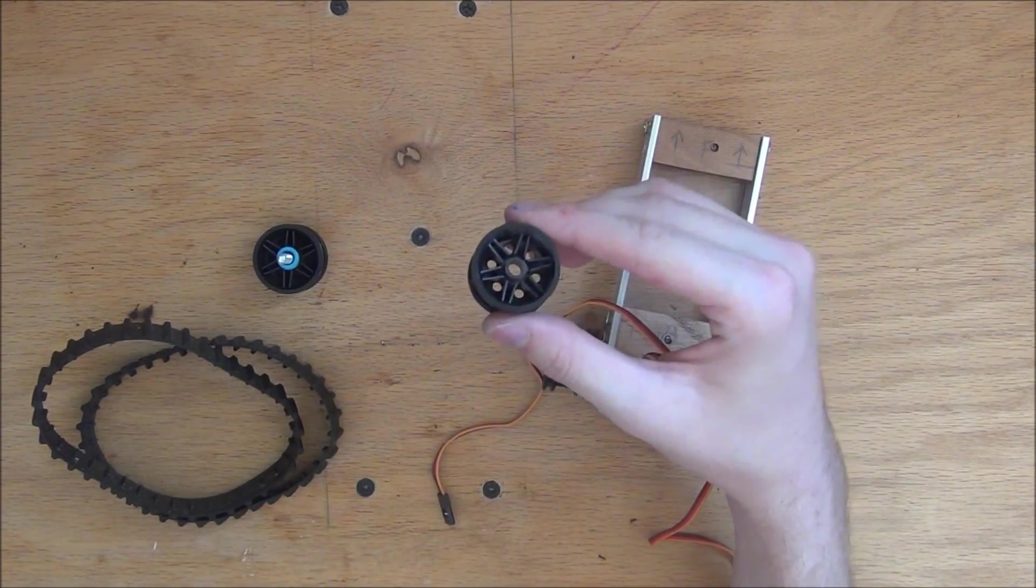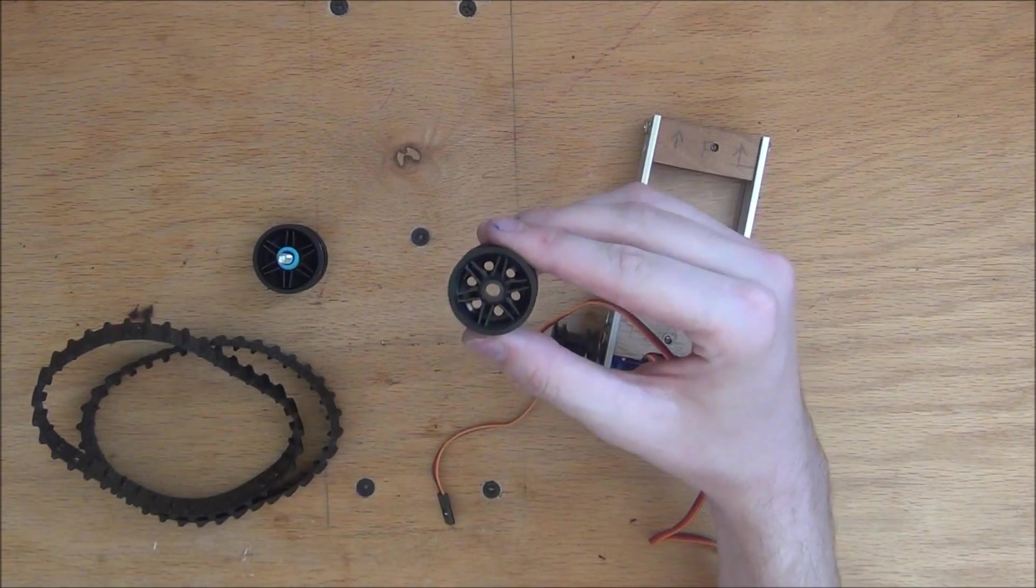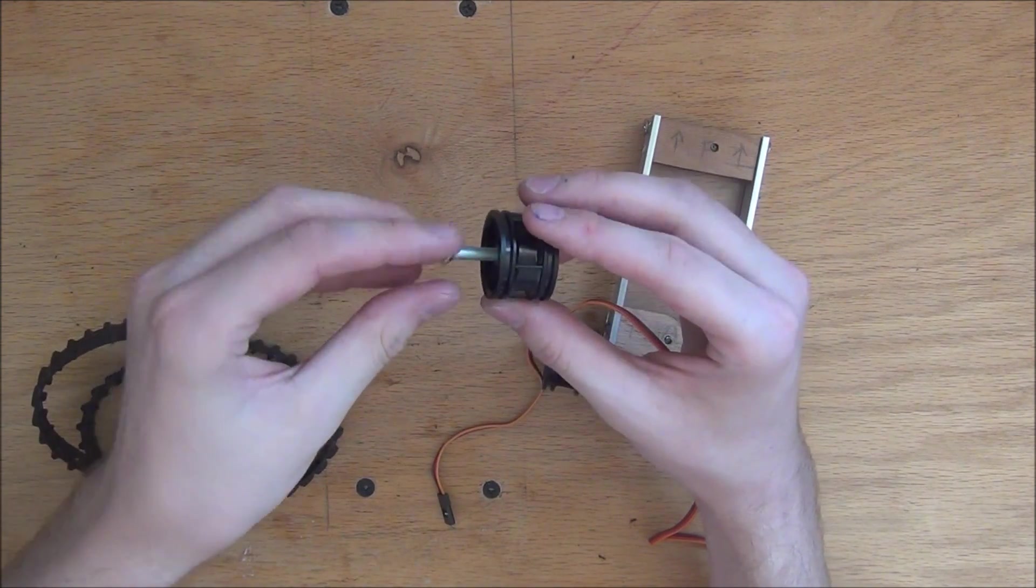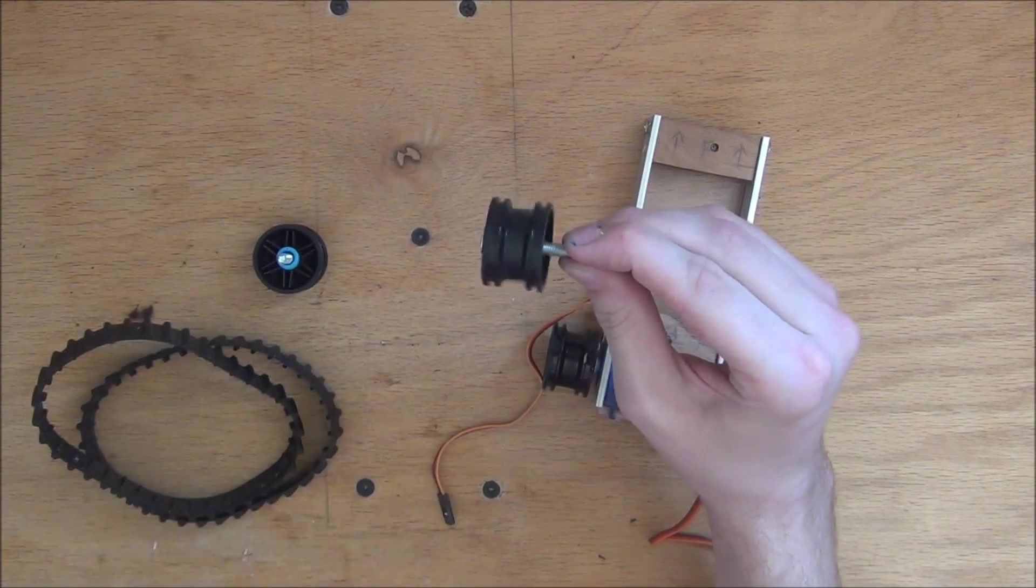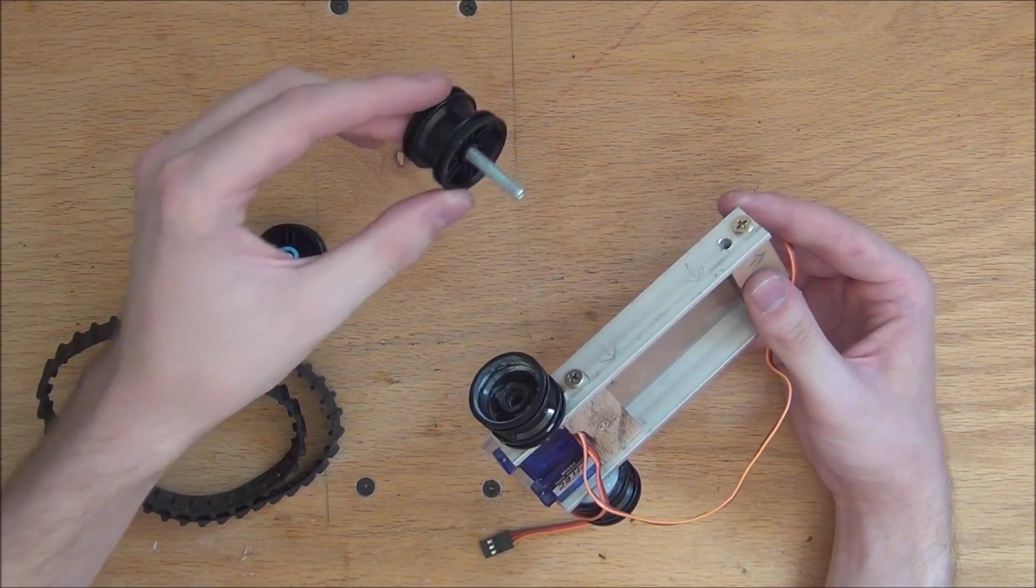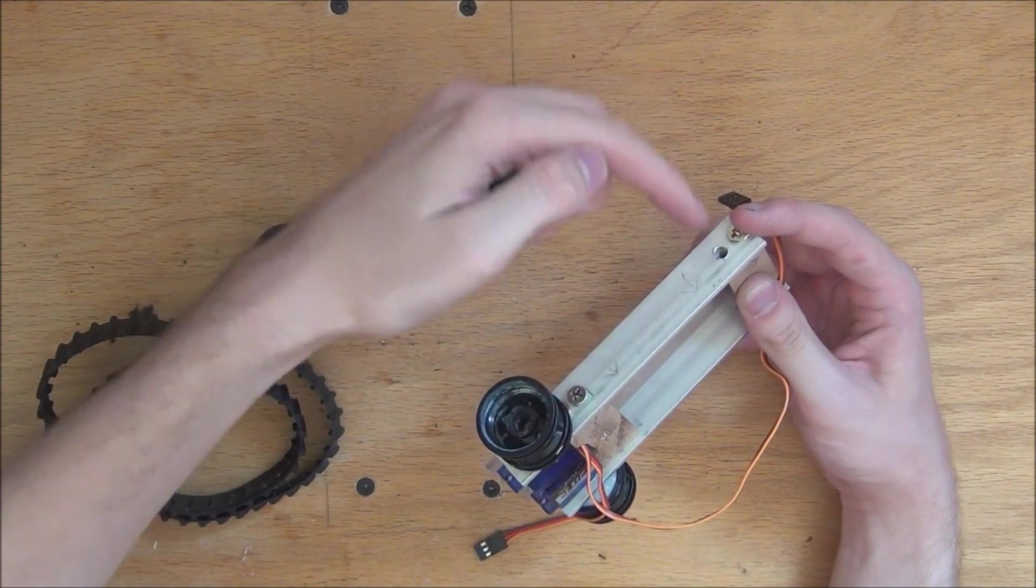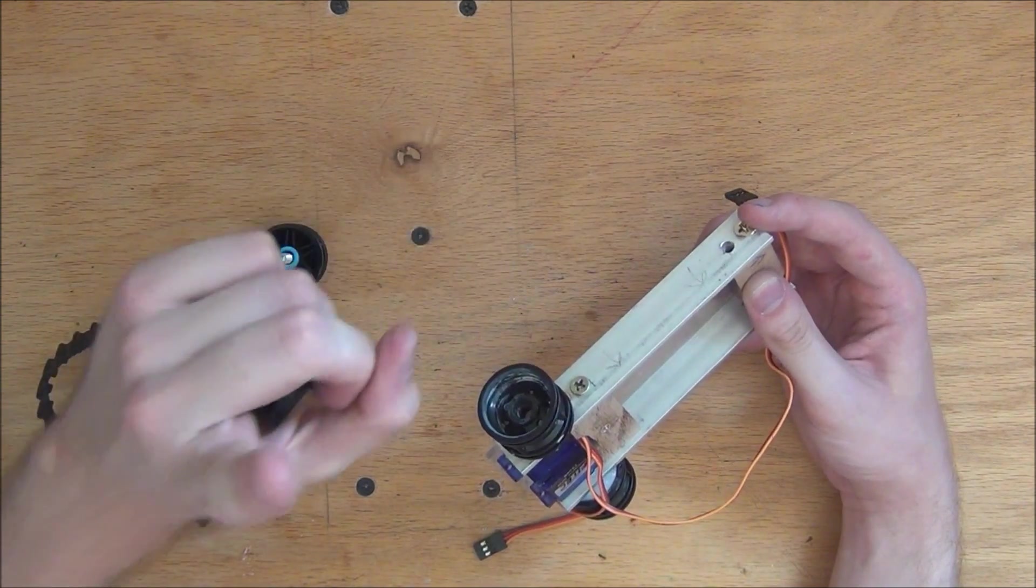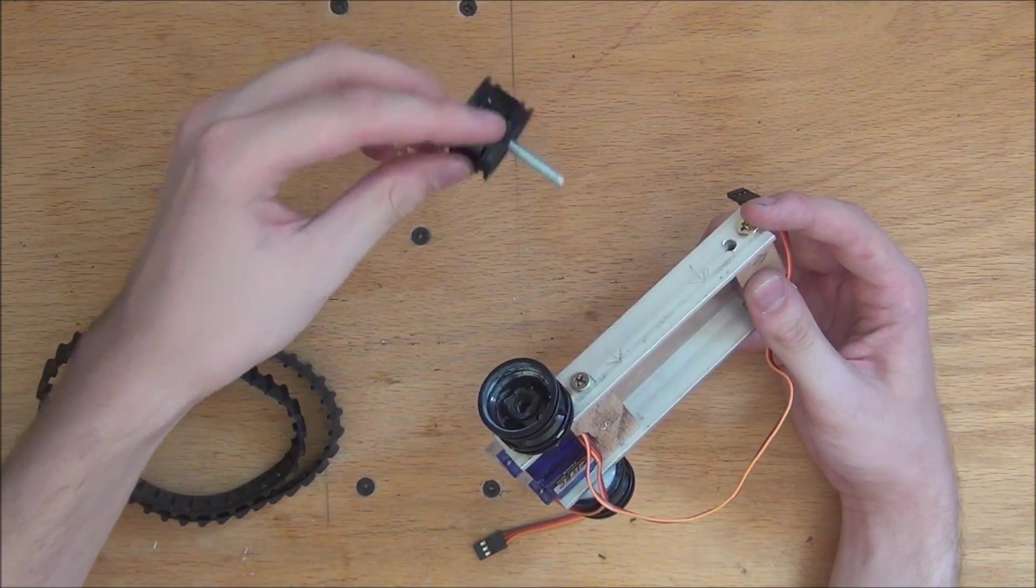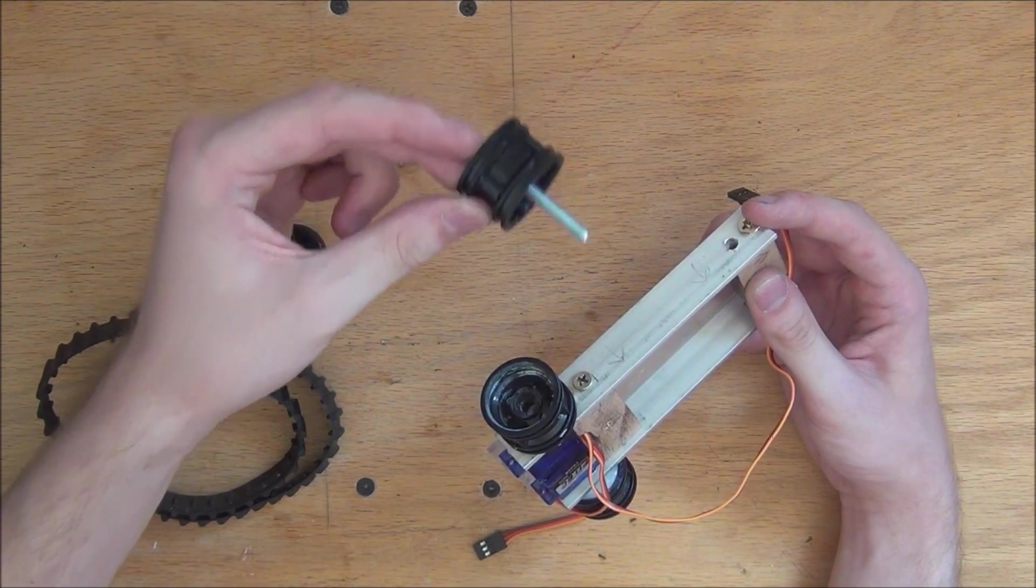And then for the front track wheel, what I did is I drilled out the center just large enough so that I could freely rotate on a one-eighth of an inch bolt. So in a minute we're going to want to drill in our front track wheel into this hole that is four inches from the servo. But before we do that, we're going to want to put some spacings or washers on our front wheel.